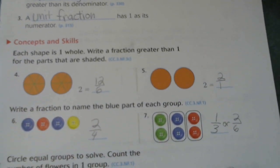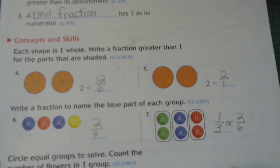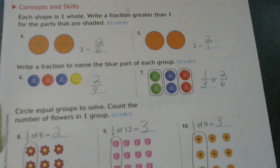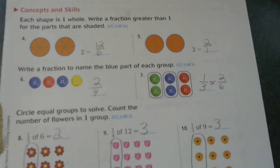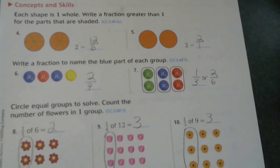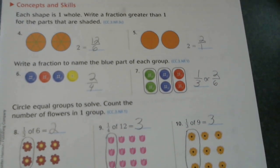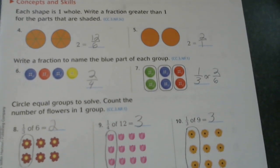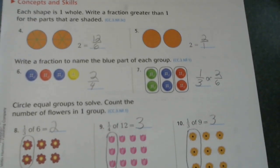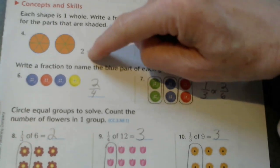On concepts and skills, it says each shape is one whole. Write a fraction greater than one for the parts that are shaded. Now if you look closely at number four, it has two orange circles that are each divided into eight. So to write a fraction that is greater than one, we have to first start with the denominator. And we figure the denominator by counting how many each of the whole is divided into. Each of those whole circles is divided into sixth, so that is our denominator. Then we have to count how many each whole is divided into and colored. Each one is divided into six, and that makes a total of 12. So 12/6 equals two whole.